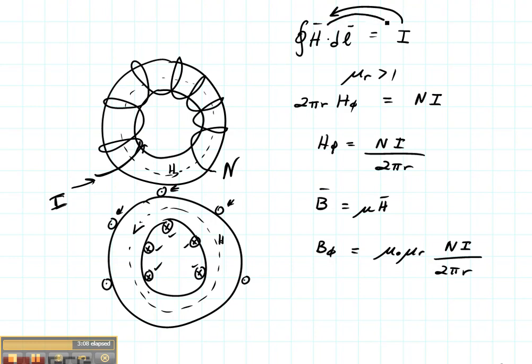or if we wanted to use this toroid as a pickup for the magnetic field instead, we could have the magnetic field produce a current in this wire. And it goes back and forth. The calculations are identical. So if we wanted to know how much current would be generated from that magnetic field, we would simply solve for current instead of solving for h. So the current would be 2 pi r H phi divided by n.